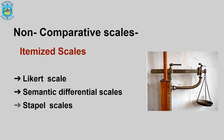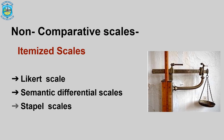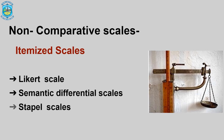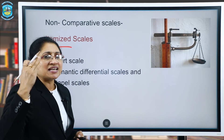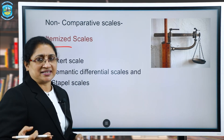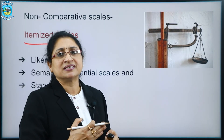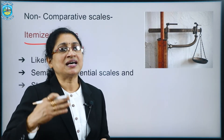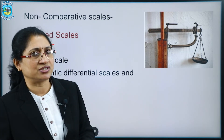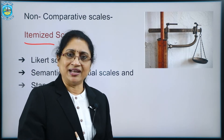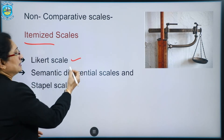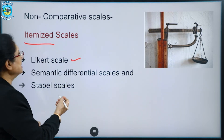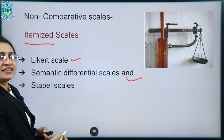Moving on to itemized rating scales: the respondents are provided with a scale that has numbers or descriptors associated with each category so they can evaluate a particular situation. The three commonly used itemized scales are the Likert scale, the semantic differential scale, and the staple scale.